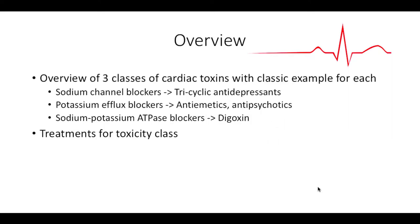Quick overview. I'm going to frame it in the setting of three different classes of cardiac toxins. There are the sodium channel blockers, which are classically the TCAs; potassium efflux blockers, which are anti-emetics; and the sodium-potassium ATPase blockers, the cardiac glycosides, which are usually digoxin. And then we'll cover the treatments.